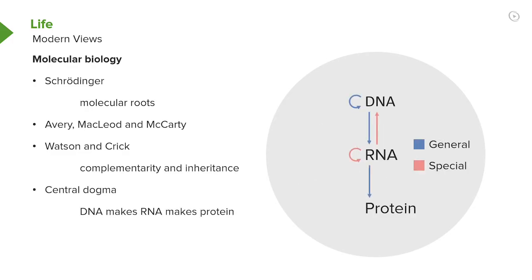The central dogma states that DNA makes RNA makes protein, and that happens because of the way information is transferred in cells. We've modified the central dogma since it was first described in the early 1960s to incorporate other things about RNA that we know today. But the central dogma and its description of the transfer of information within cells is central to everything that we do — whether we're studying genomics, transcriptomics, or metabolomics — the central dogma is as relevant today as when it was first described.